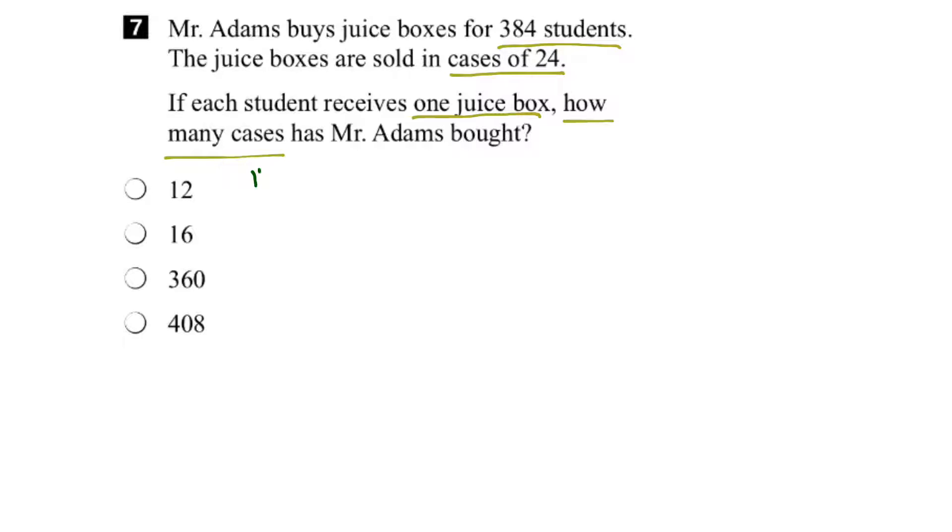So, let's put down here the number of cases and then the number of students, and then there will be some rule or operation that will relate the two. If we had one case, then 24 students would get a juice box. If we had two cases, then 48 students would get a juice box.